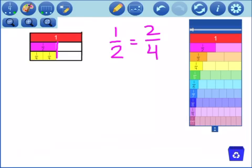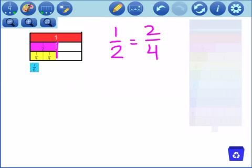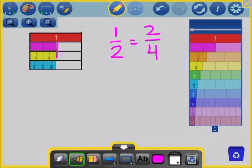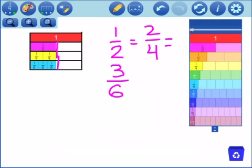Now, I can pull out, let's see if it will work with sixths. Let me see if I can line some sixths up here. Look at that. I can line up three. It's still holding that same value. So 1 half and 2 fourths is equivalent to 3 sixths.